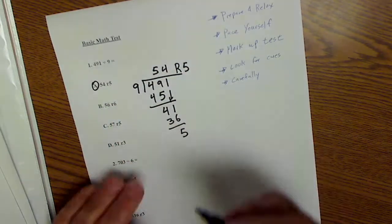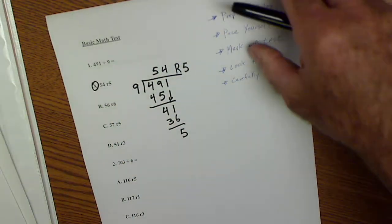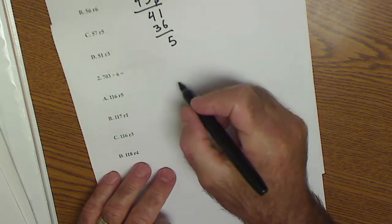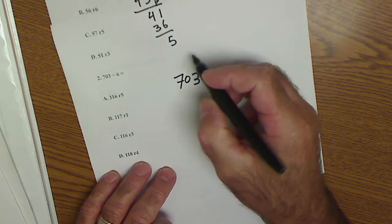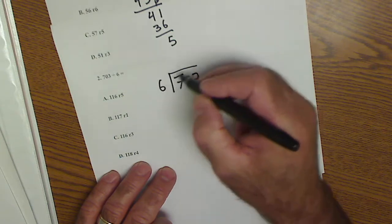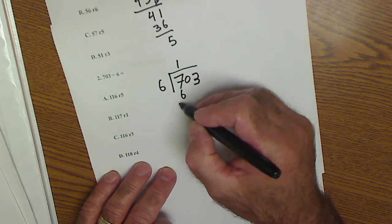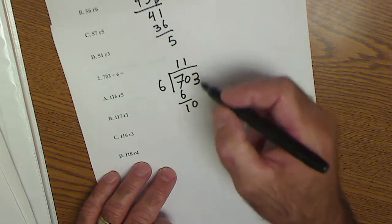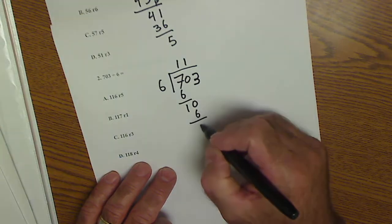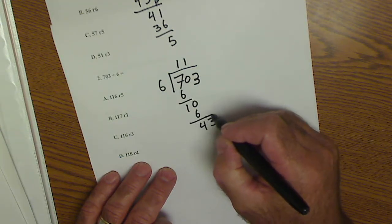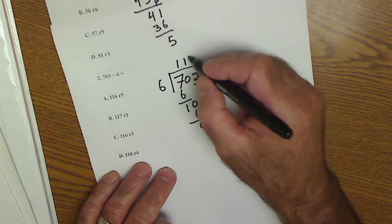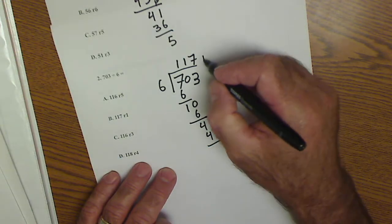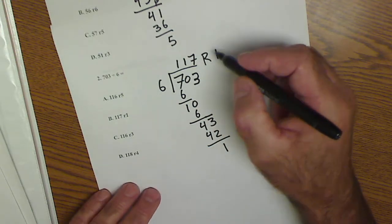Next one, also division: 703 divided by 6. Goes into the 7 one time. Subtract, bring down the 0. 10, it goes in there once. 10 minus 6 is 4. Bring down the 3. It goes into 43 seven times to give you 42 with a remainder of 1. So 117 remainder 1. That was answer B.